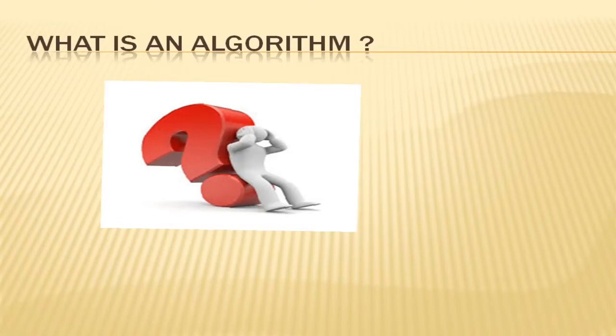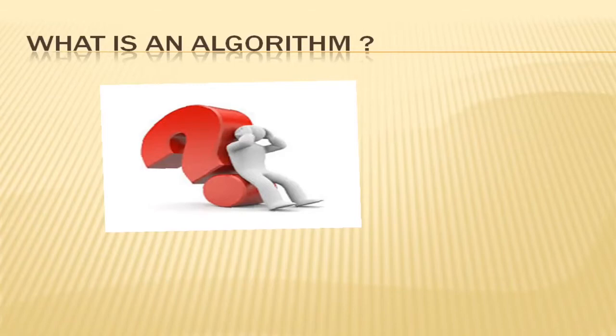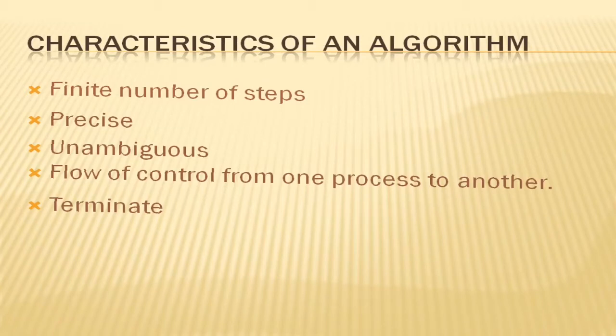Now that we know the definition of an algorithm, let us look at the characteristics of an algorithm. An algorithm has a set of characteristics which you should be aware of, and they are: an algorithm should have a finite number of steps, an algorithm should be precise, an algorithm should be unambiguous, an algorithm should have a flow of control from one process to another, and an algorithm should terminate.